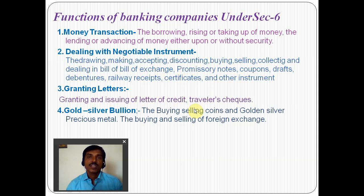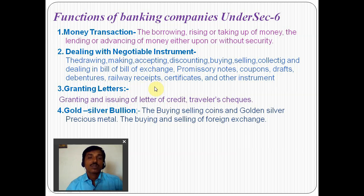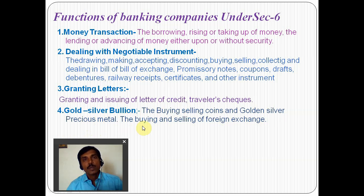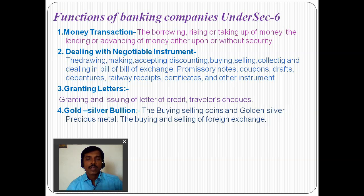Another function is granting letters of guarantee and issuing letters of credit. When a new company is launched into the market, it needs a guarantee letter from a third party. Banks also deal in the buying and selling of gold and silver bullion — buying and selling of coins and precious metals. Occasionally, banks can sell silver or gold coins during festivals like Dussehra and Diwali.